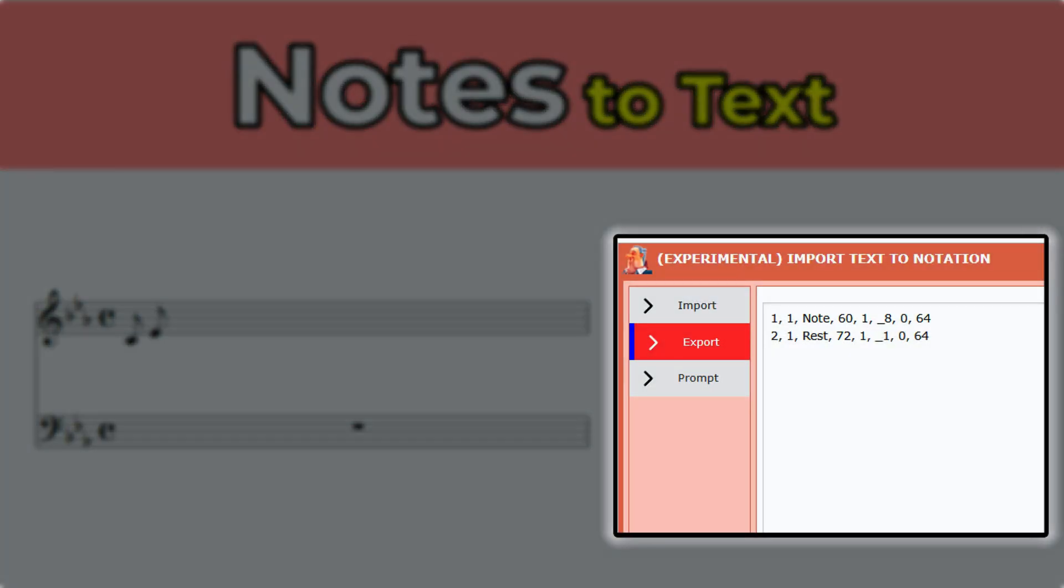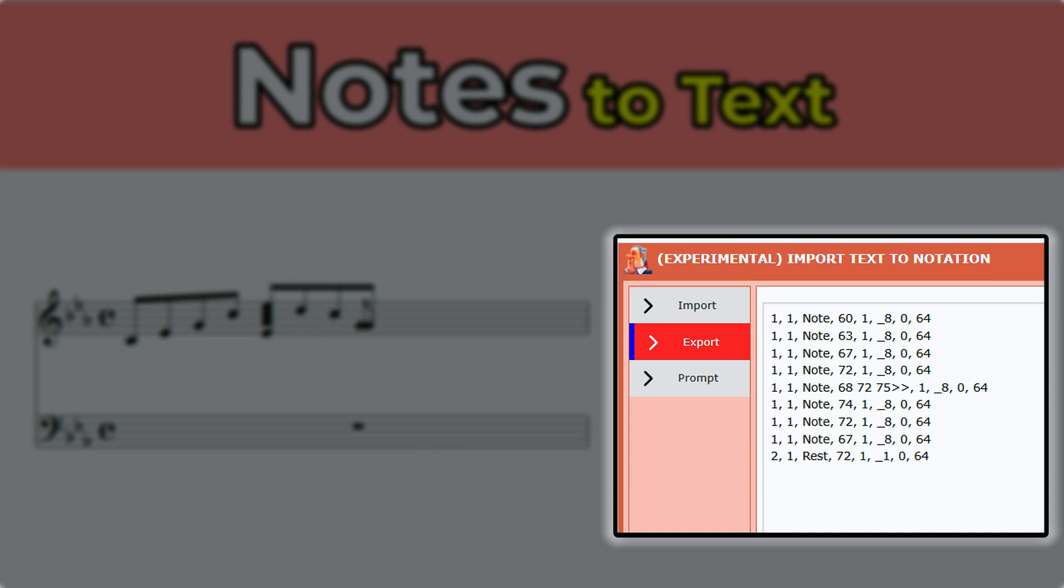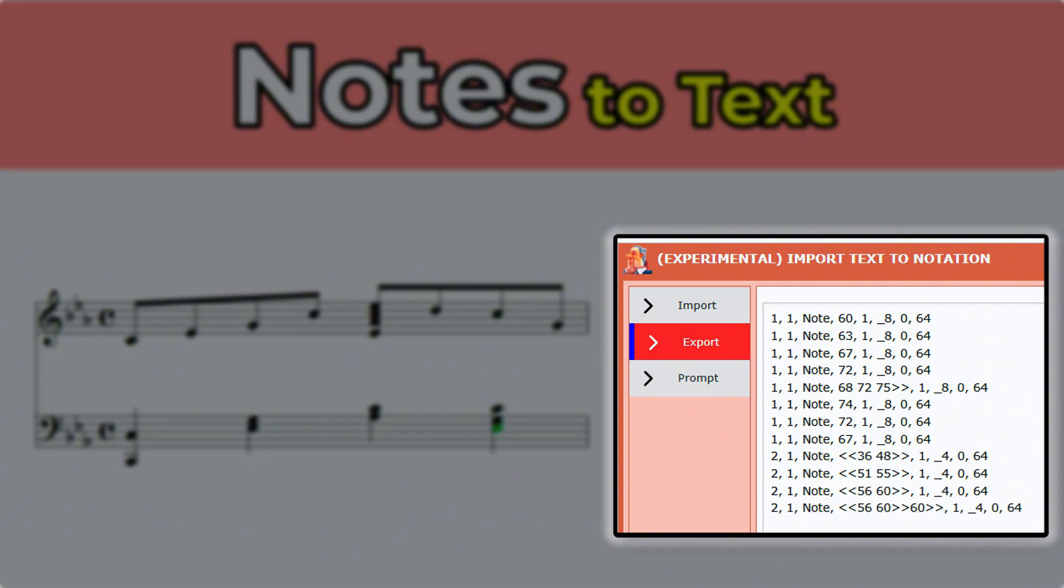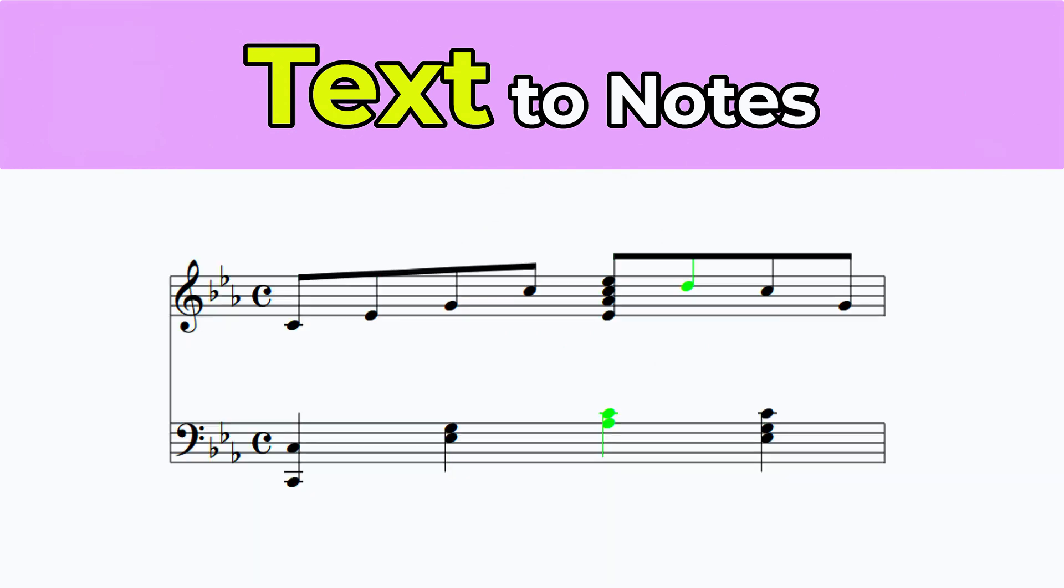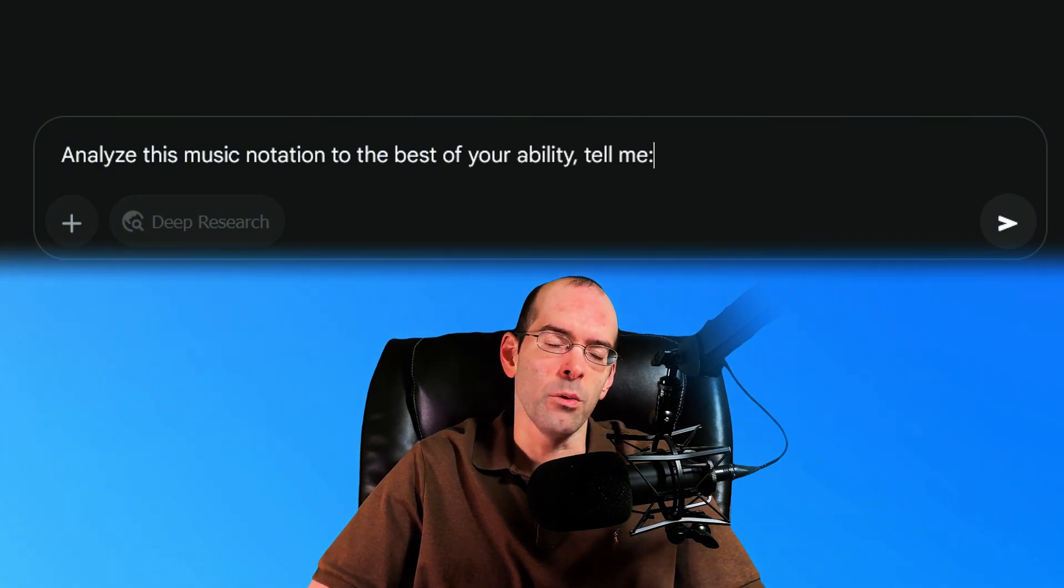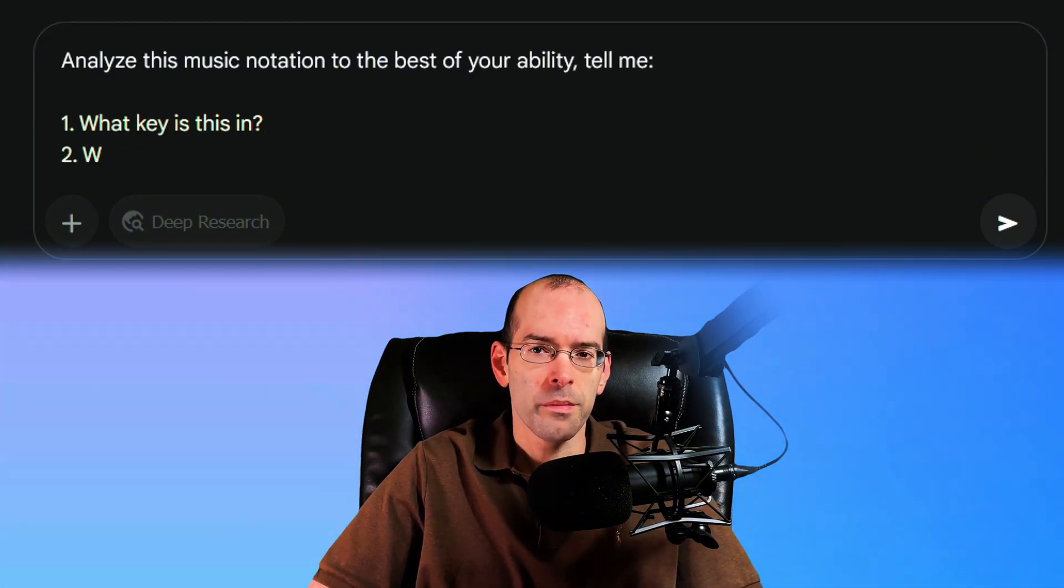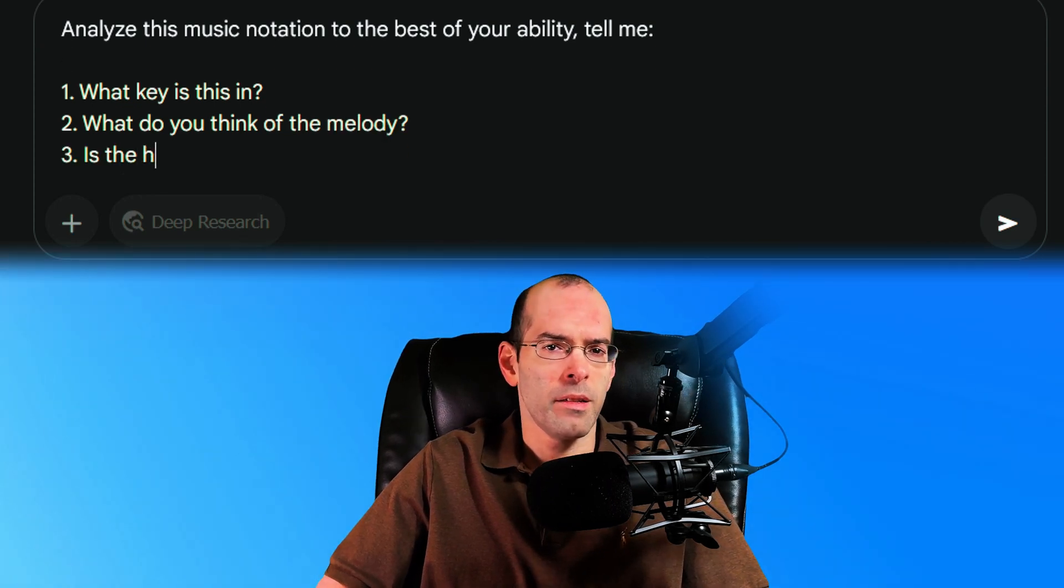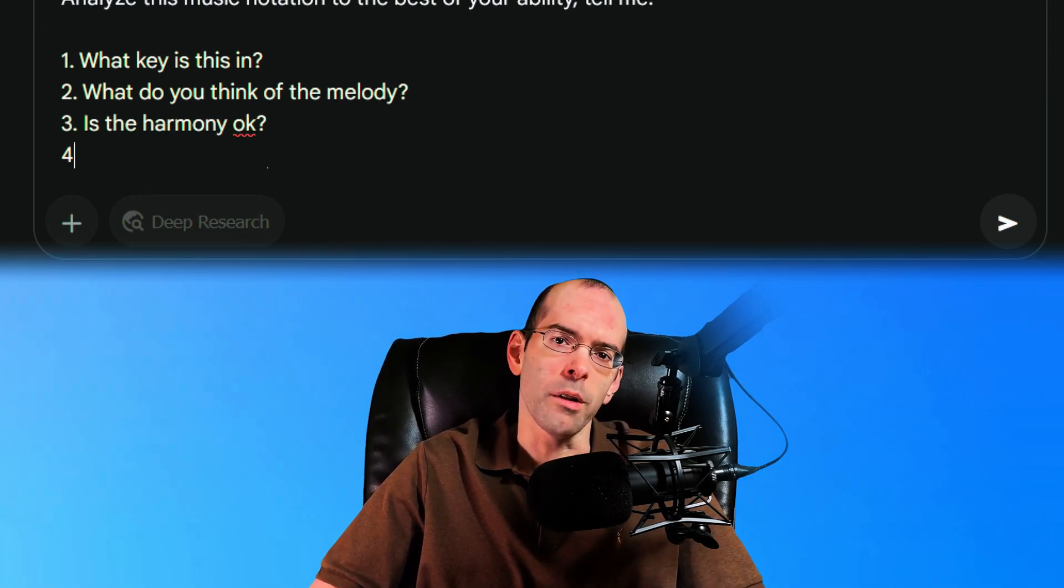As you start composing, MusicDotter will record all of your music in a comma-delimited text format. And then what you can do is you can save this text and paste it into any AI chat box, like this. And then from here, you can ask the AI to analyze your music or make any corrections.